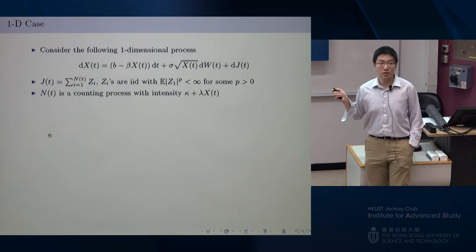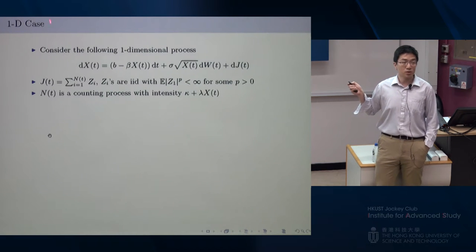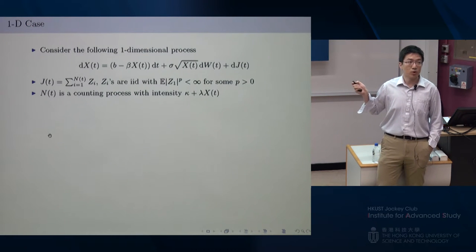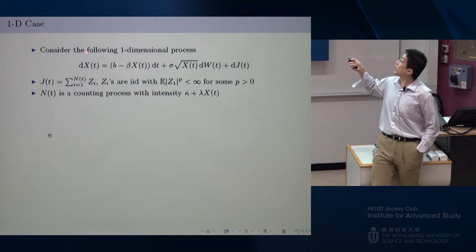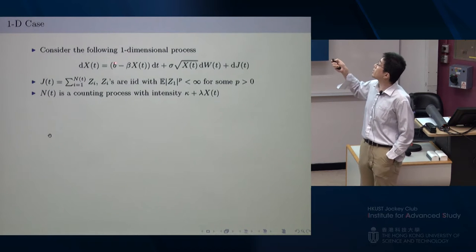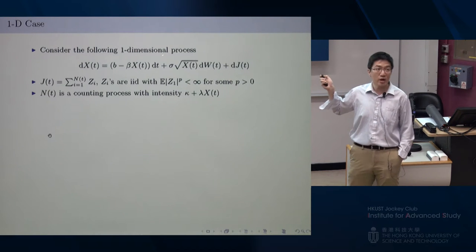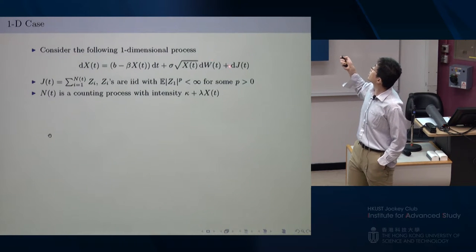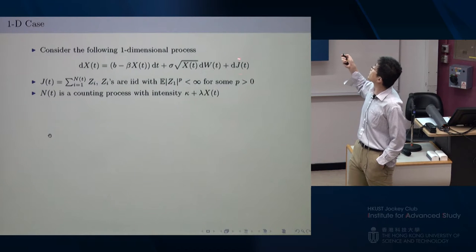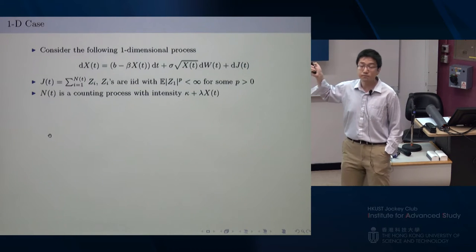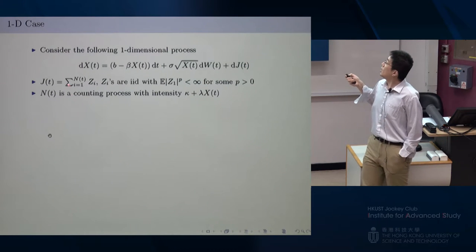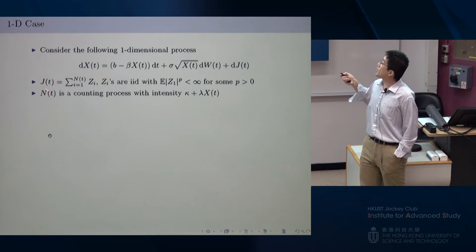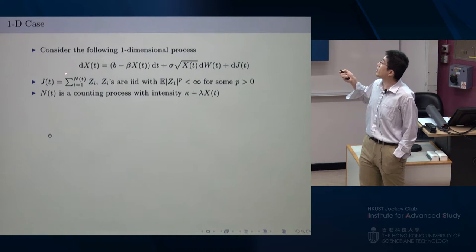To motivate the idea, consider the one-dimensional CIR process with one additional term to represent jumps. This jump process is written in the form of a compound Poisson-like process, but the difference is that the counting process N(t) — representing the number of jumps — is not a standard Poisson process, but a process whose jump intensity is state-dependent, depending on the value of the process X.